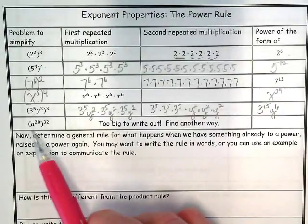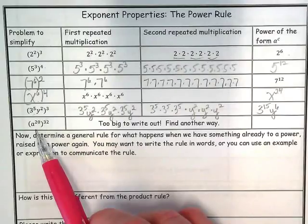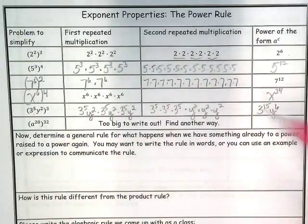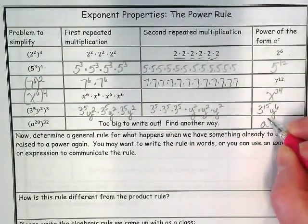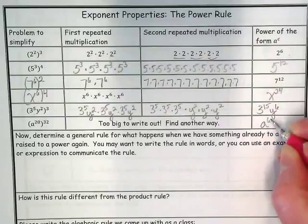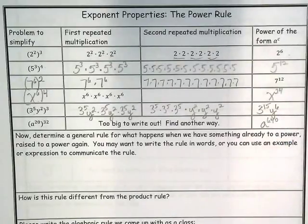So what are we doing with this last one that is way too big to write out? You're multiplying it. We are multiplying it. What's 20 times 32? 640. 640.